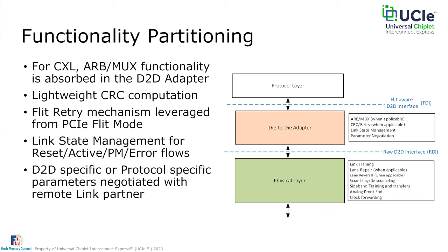With respect to functionality partitioning: for CXL, the ArbMux is inside the die-to-die adapter, taking over all that functionality. The adapter features a very lightweight CRC computation — a 16-bit CRC that guarantees triple-bit error detection. This has been verified to converge at very high frequencies and can be pipelined, providing low-overhead logic with very robust error detection.